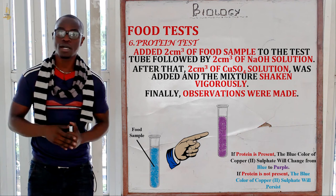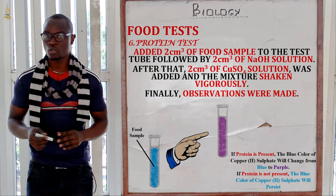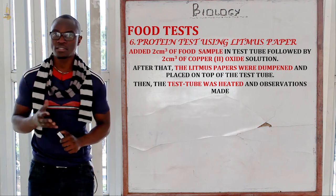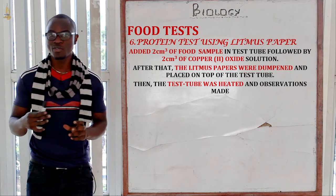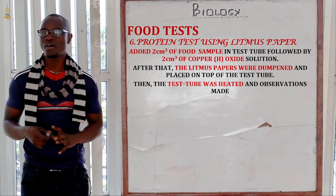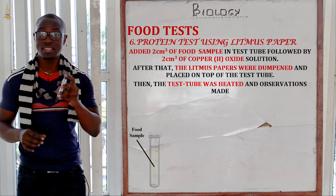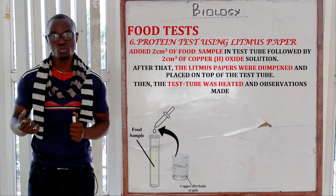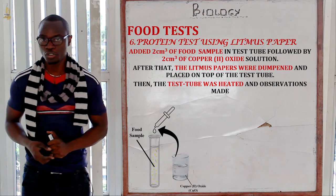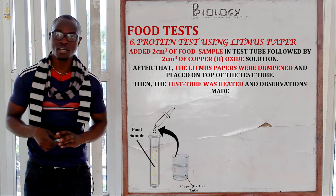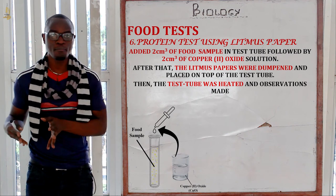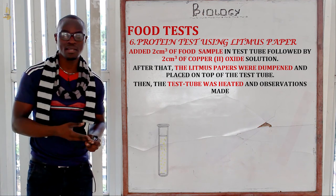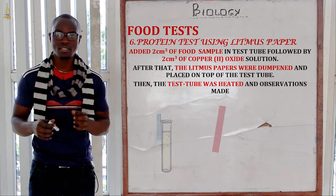If protein is not present, the blue colour of the copper sulfate solution will persist. The second protein test uses lead acetate paper. We take the food sample and place it in the test tube. Then we add about one to two centimetres cubed of copper oxide solution — or if using solid copper oxide, add drops of water to make it damp before adding it to the food sample. Then dampen both the red and blue lead acetate papers and place them on top of the test tube.